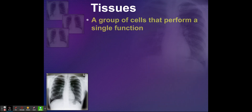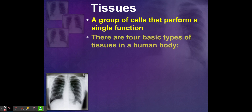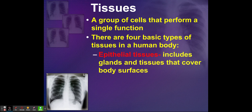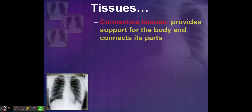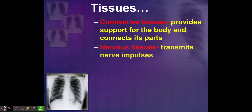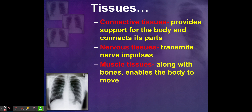Tissues are a group of cells that perform a single function. There are four basic types of tissues in the human body. We have epithelial tissues, which include glands and tissues that cover body surfaces. We also have connective tissue, which provides support for the body and connects its parts. We have nervous tissue, which transmits nerve impulses. And we have muscle tissue, which along with bones enables the body to move.